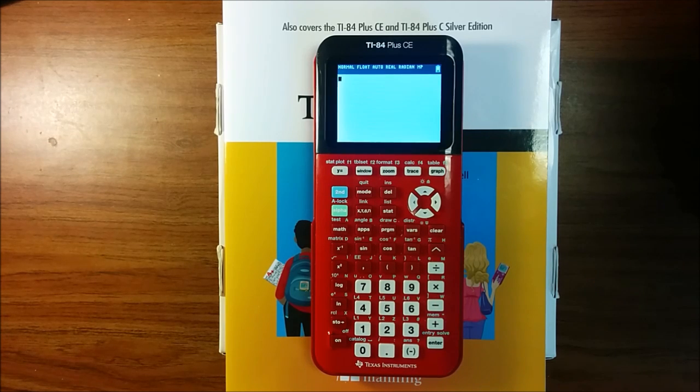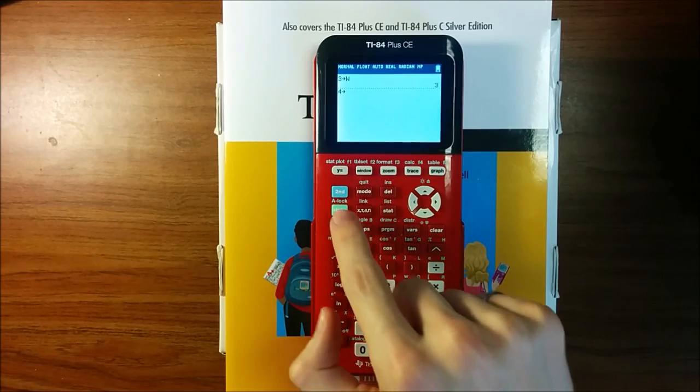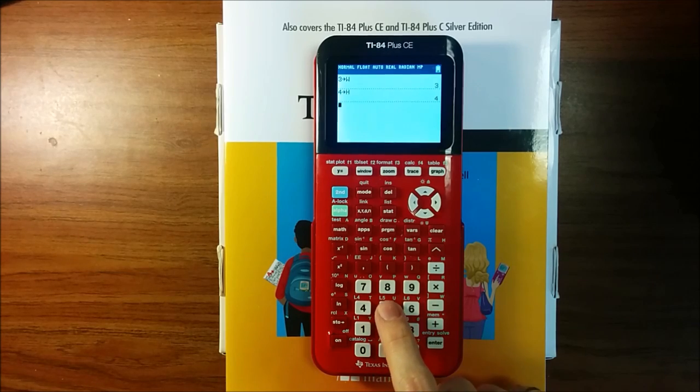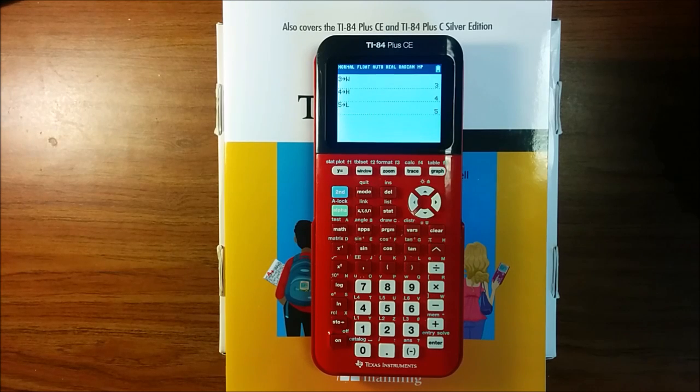Let's say I wanted to find the volume of a box. Let's say this box has a width of 3, a height of 4, and a length of 5. Because the width is 3, I will store 3 into the variable w, for width. Next, I'll store 4 into the height, h. And finally, I'll store 5 into the length, l. Notice that after each store statement, I have pressed enter, which instructs the calculator to complete that store.